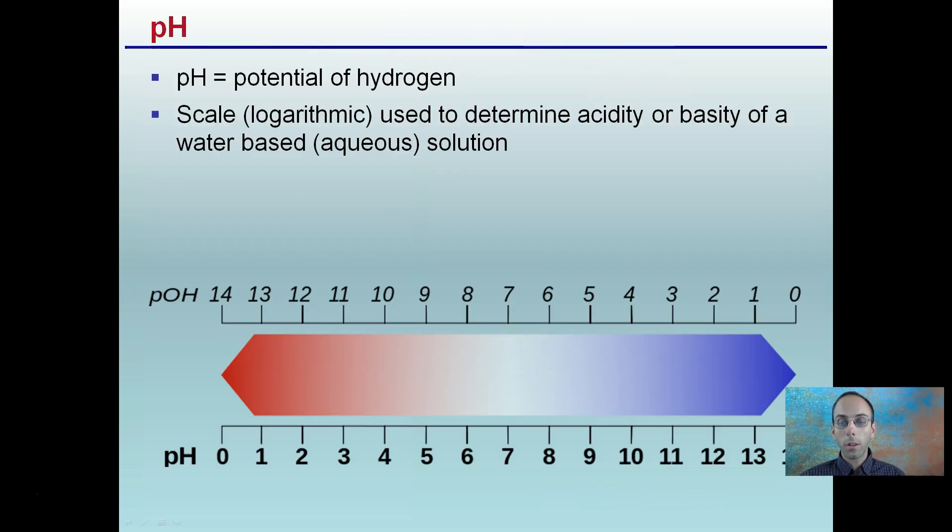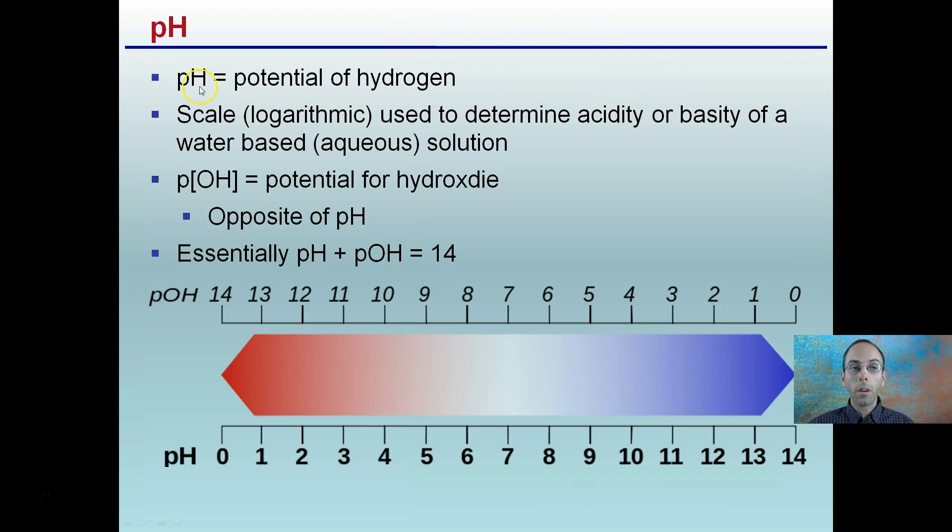So first off, pH, what does that even stand for? It equals the potential of hydrogen. This scale is logarithmic, meaning it's not linear, and we're going to see what impact each of these pH numbers mean. It's used to determine the acidity or basity of water based on an aqueous solution. There's also something called pOH, which is the potential for hydroxide. So potential for hydrogen is pH, hydroxide is OH. This is the opposite of pH.